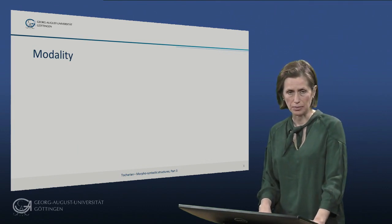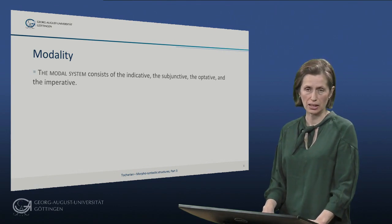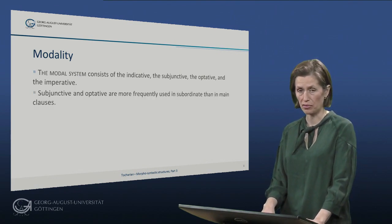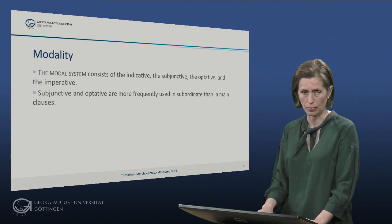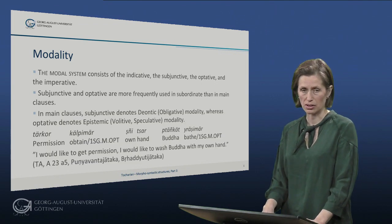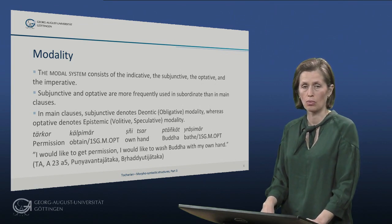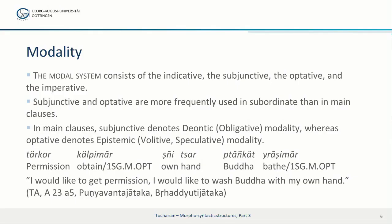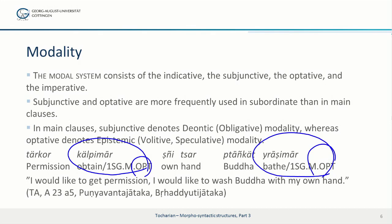Let's move over to modality. The modal system consists of the indicative, the subjunctive, the optative, and the imperative. Subjunctive and optative are more frequently used in subordinate than in main clauses. In main clauses, the subjunctive denotes deontic or obligative modality, whereas the optative denotes epistemic, volitive, or speculative modality. For example, 'kelpimar' (optative) and 'irashimar' (optative) express 'I would like to get permission, I would like to wash Buddha with my own hand.' This is from the Punyavantaka or the Buddha Jataka, where the person uses the optative to request permission to wash the Buddha.